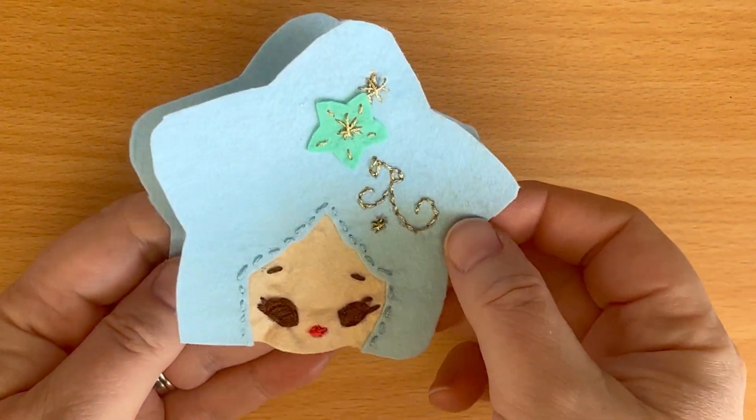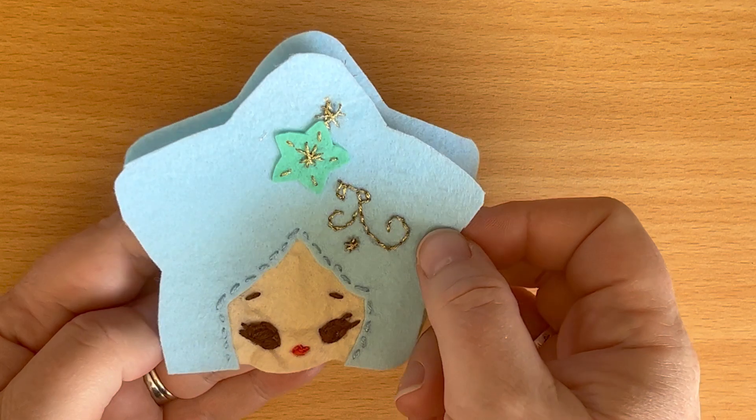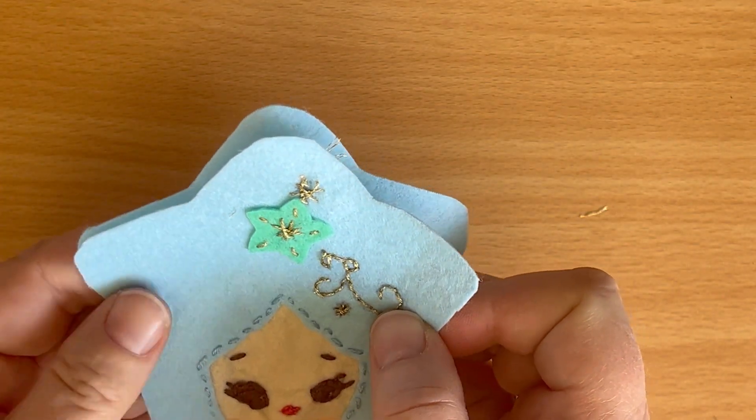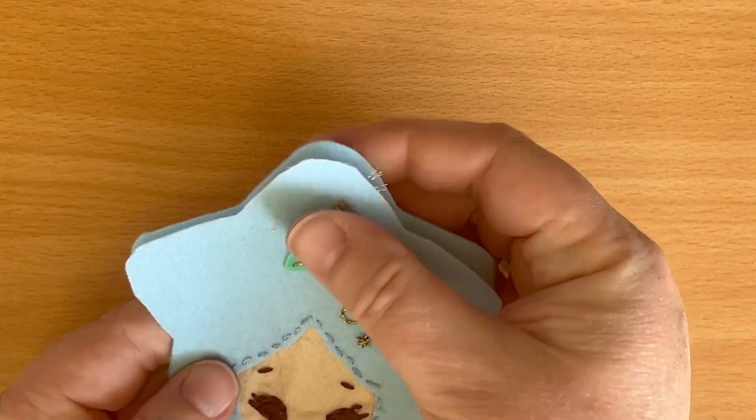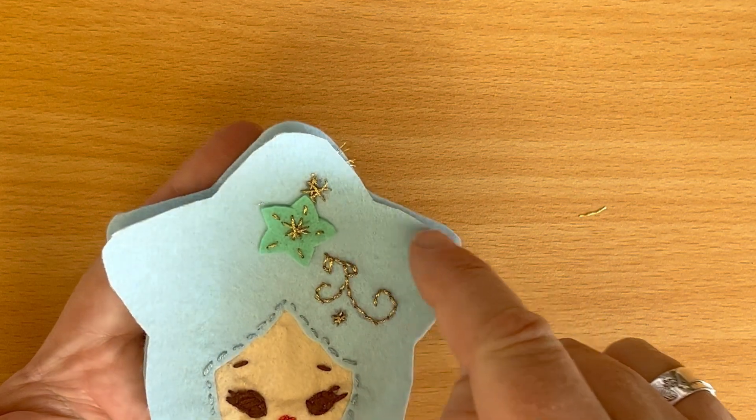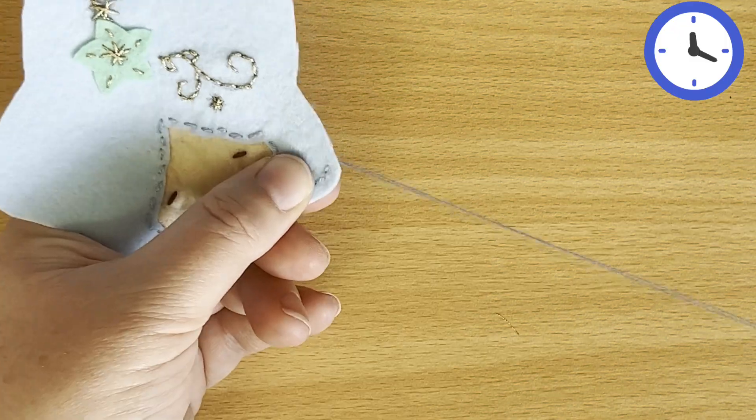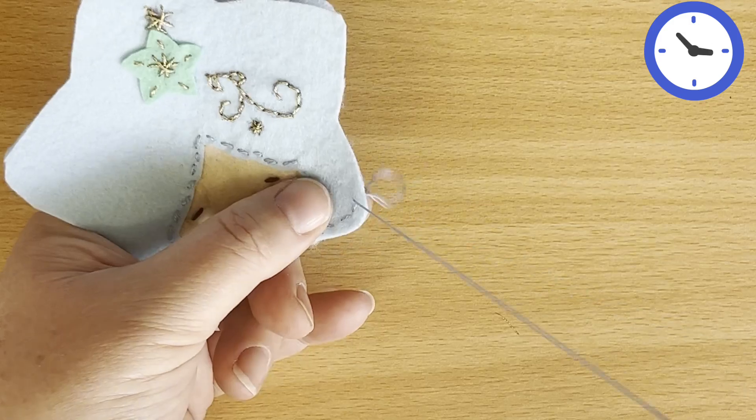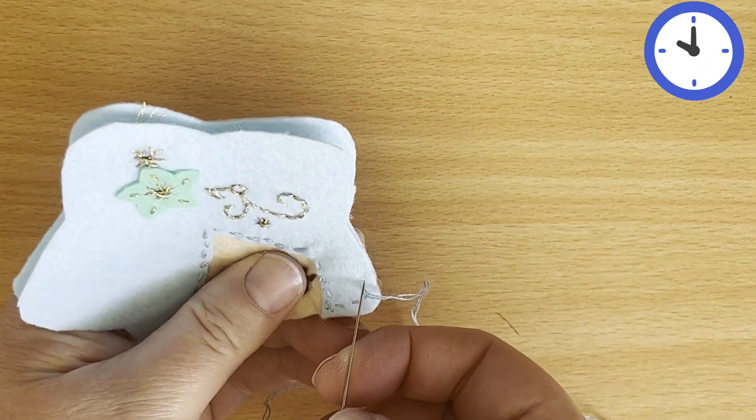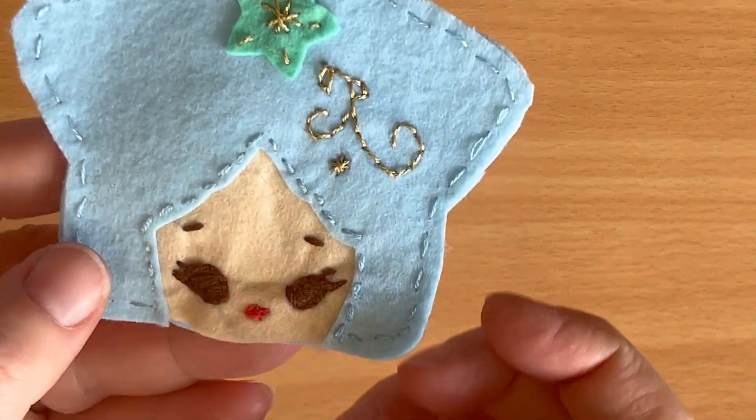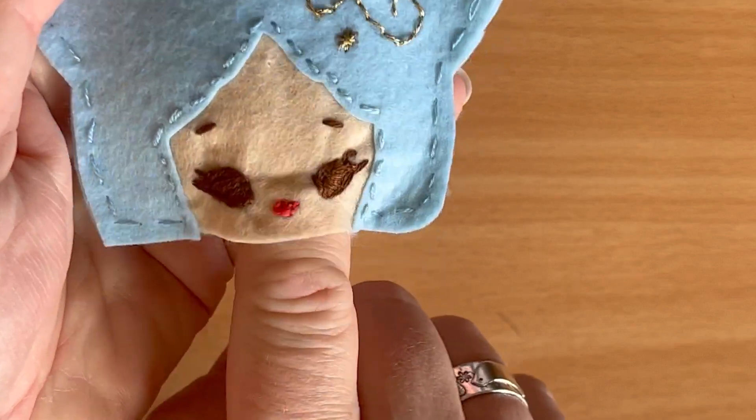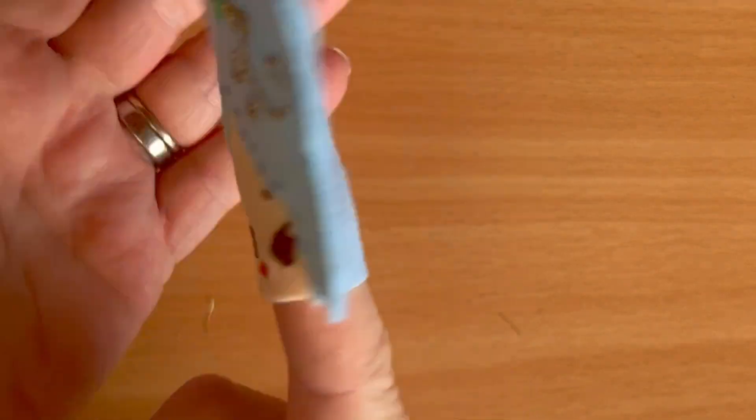Next we need to put the back of the hair on and just match that up, make sure it's the right shape, and then we're going to just do a running stitch all the way around the edge to finish, leaving a gap for stuffing. Not sure why this part of the video was pale. So now you're left with a gap ready for stuffing later.